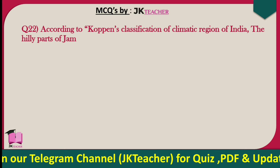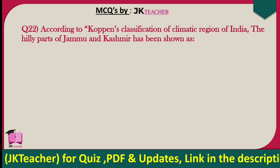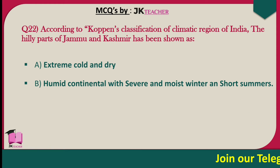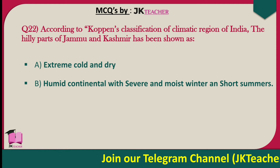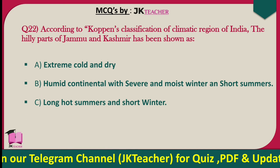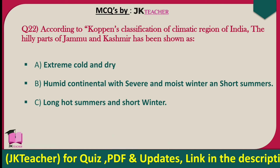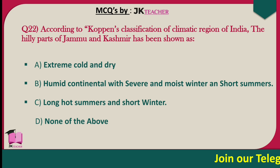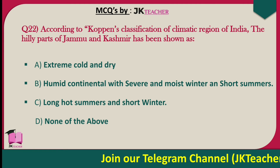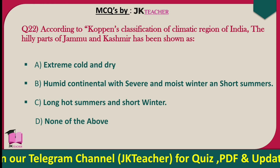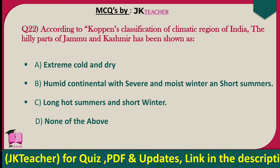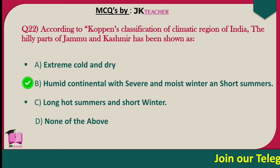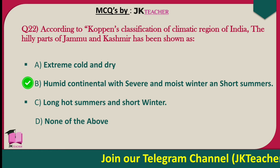According to Koppen's classification of climatic regions of India, the hilly parts of Jammu and Kashmir have been shown as — options are extreme cold and dry, humid continental with severe and moist winters and short summers, long hot summers and short winters, and none of these. The right answer is option B — humid continental with severe and moist winters and short summers.